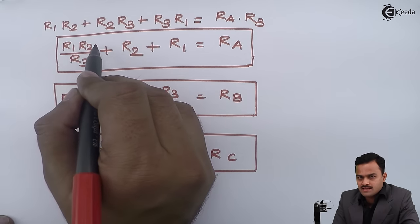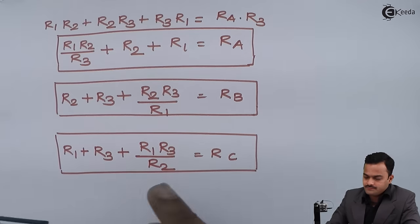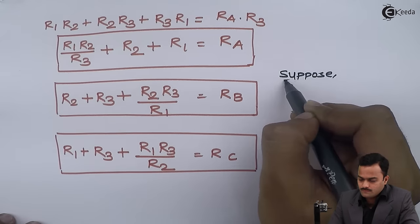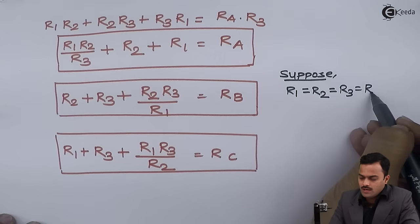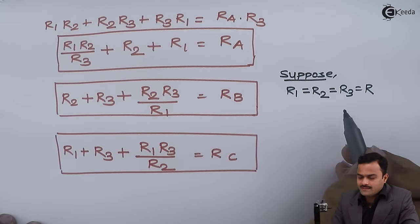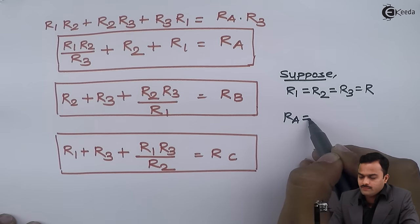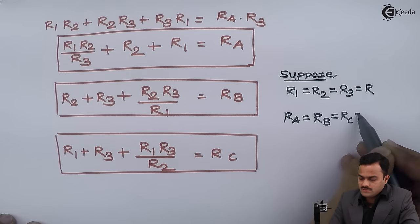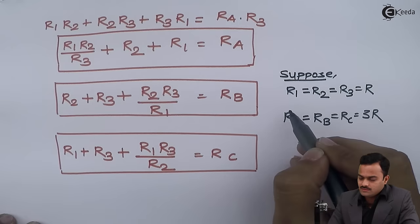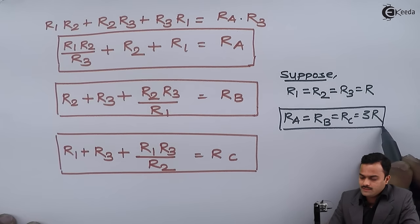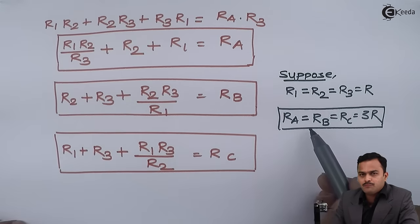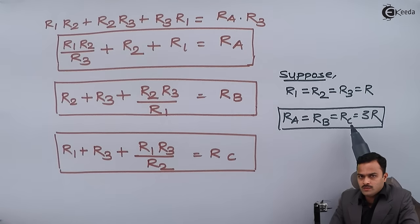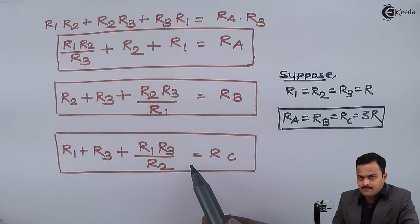So when converting star to delta, the delta resistors RA, RB, RC are each equal to the addition of the two corresponding star resistors plus their product divided by the third. For a special case where R1 equals R2 equals R3 equals R, the equivalent delta will have RA equal to RB equal to RC equal to three times R. So whenever a circuit has equal star or delta resistors, instead of using the full formula you can simply write three times the resistor value to get the equivalent delta. Thank you.